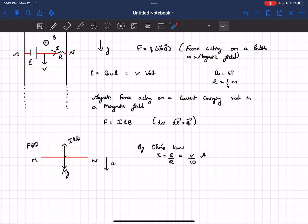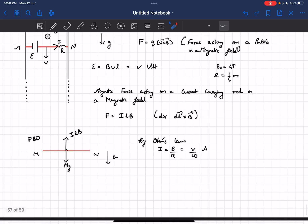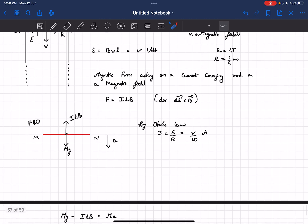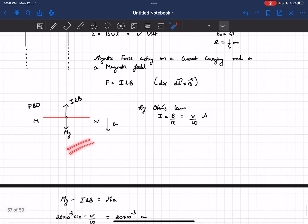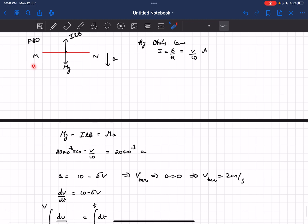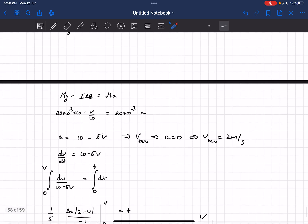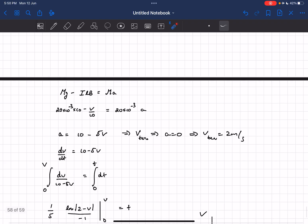So if we have to draw the FBD of rod MN it would be of this sort: the weight of gravity will act towards the downward direction and the magnetic force ILB would be acting in the upward direction. At any general time t the rod moves with an acceleration a downwards. Now we can write Newton's second law equation for the rod MN and we'll get mg minus ILB equals ma.